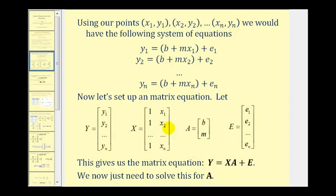Let's see why the column of ones in matrix x is necessary. If we start multiplying matrix x and matrix A, row one times column one gives us: one times b gives us b, our y-intercept, and x sub one times m gives us the slope times the variable x. So that column of ones is what gives us the y-intercept in each of these linear equations.